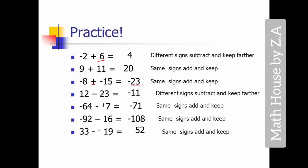Same signs — add and keep. Next, one number is positive and one is negative, opposite signs, so we subtract and get 11. Here 23 is greater than 12, and 23 is negative, so the answer is negative — different signs, subtract and keep. Here we have one number with a negative sign and the other with a positive sign. We are going to subtract, but the two signs in the middle — plus minus minus — multiply to make a single sign.